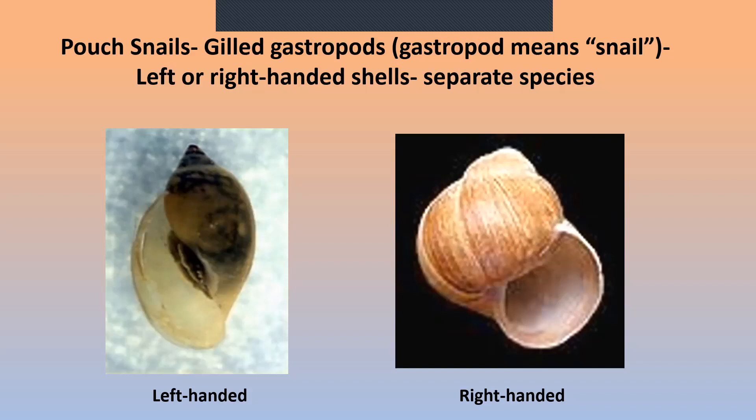Pouched snails are gilled gastropods, totally different from ground snails, garden snails, or slugs. Gastropod literally means snail. There are different species based on whether they are left-handed or right-handed shelled. If you hold one with the pointed end facing away from you, the shell opening will either be to the left or the right. That's called left-handed and right-handed, and even though they might look identical otherwise, they are separate species.